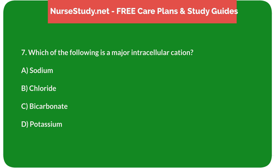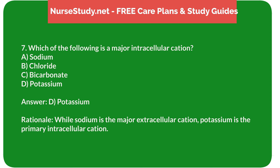Question 7: Which of the following is a major intracellular cation? A. Sodium. B. Chloride. C. Bicarbonate. D. Potassium. Answer: D. Potassium. Rationale: While sodium is the major extracellular cation, potassium is the primary intracellular cation.